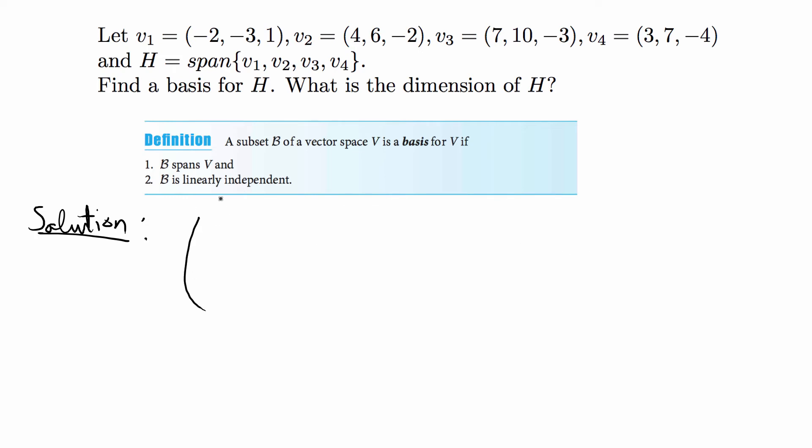Okay so I'm going to combine v1 through 4 so negative 2, negative 3, 1, 4, 6, negative 2, 7, 10, negative 3, 3, 7, negative 4 and I think I've already made a video on how to do row reduced echelon form.